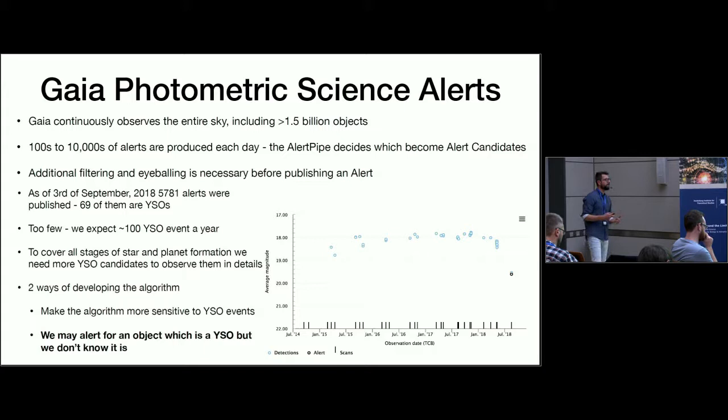As of Monday, almost 5800 alerts were published and as far as we know only 69 of them are known to be YSOs, which is quite a small number. We expect a higher number, at least around 100 YSO events a year. We need to capture all these sudden brightness changes in YSOs to cover all the stages of star and planet formation.